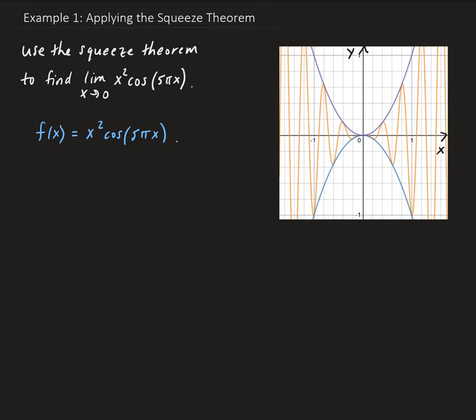What we can do is start out by looking at cosine of 5 pi x. We know that cosine, for whichever argument it is, is bounded between negative 1 and 1. So we have that minus 1 is less than or equal to cosine of 5 pi x, less than or equal to 1.